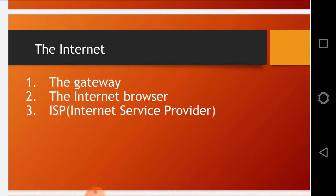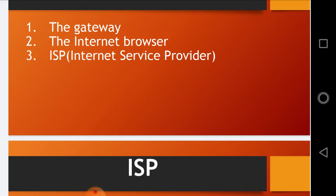Today we discuss three topics: ISP, internet browser, and gateway. First, ISP — what is ISP? It's Internet Service Provider. Long story short, it's the people or the company that provides you internet and you pay them money. Some ISPs in Pakistan are PTCL, Stone Fiber, and Fiber Link. These are just a few examples of what ISPs are.